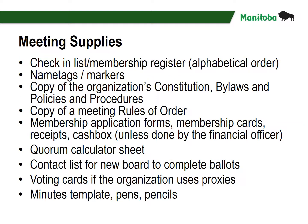Here are some things useful as a secretary at an AGM: a check-in list or member register in alphabetical order; name tags and markers; a copy of the organization's constitution, bylaws, and policies and procedures; a copy of meeting rules of order; membership application forms, membership cards, receipts, and cash box (unless this is done by the financial officer); a quorum calculator sheet; a contact list for the new board to complete, including name, address, and occupation; ballots; voting cards if the organization uses proxies; a minutes template; and pens and pencils.